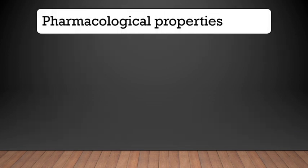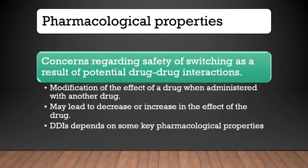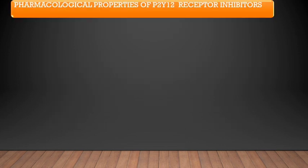Different agents have different pharmacological properties, and concerns surrounding the safety of switching have emerged because of the potential for drug-drug interactions. Drug-drug interactions are defined as modifications in the effect of a drug when administered with another drug, which may lead to a decrease or increase in the drug's effect. The effects of P2Y12 inhibitors can be decreased, leading to inadequate platelet inhibition and increased thrombotic risk, or alternatively, there may be overdosing due to overlap in drug therapy leading to excessive platelet inhibition and bleeding complications.